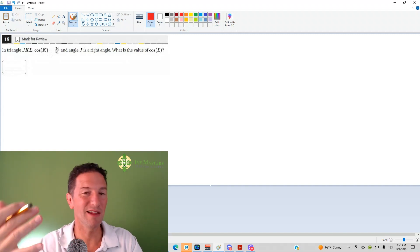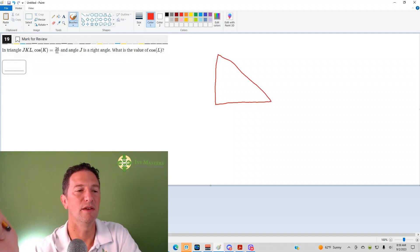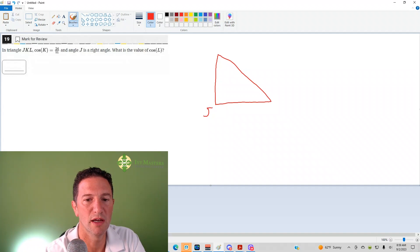So here's a tip, anytime there's something you could draw, just draw it. So we're going to draw a triangle and we're going to label. It says that J is the right angle, so I'm going to label J, I'm going to make the little box that they always make, and cosine of K, we'll put K over here, we'll put L over here.